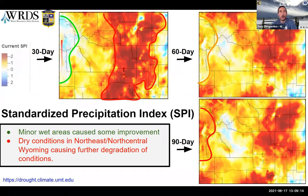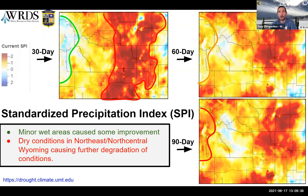In the west where we've had some improvements, we've gone from fairly bad at 90 days, improved a little at 60 days, and at the 30-day it's looking about neutral or even on the wet side. Conversely, in the southeast we've gone from on the wet side to losing ground. This whole area in the middle started out even at 90 days not looking too good, and it has been expanding over the period — showing at the 30-day how bad this area of the state is getting.